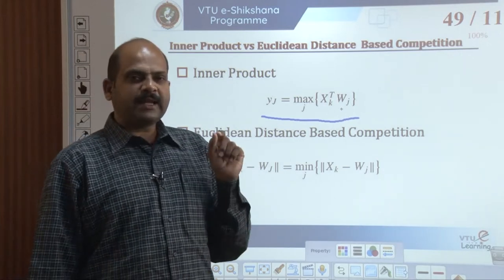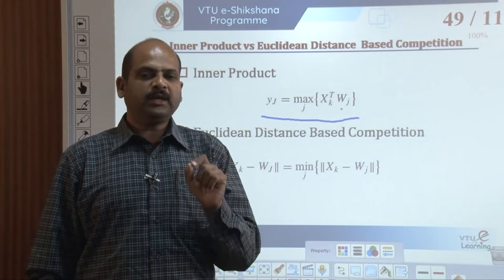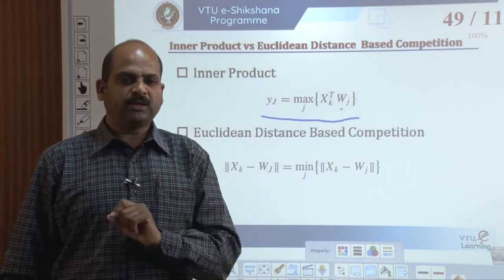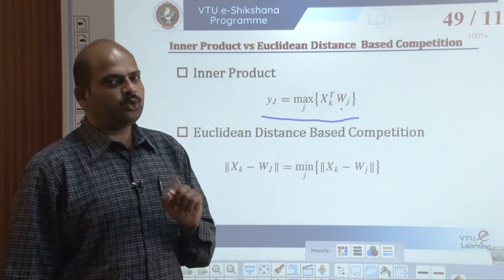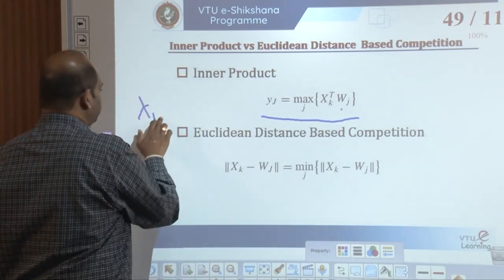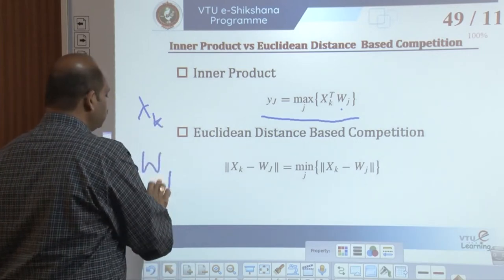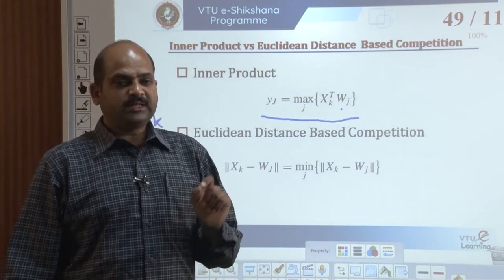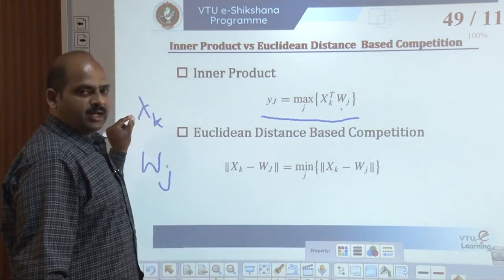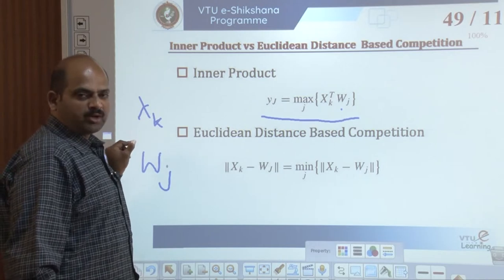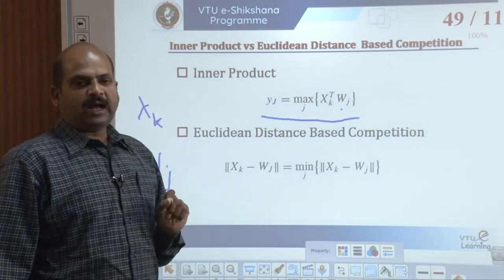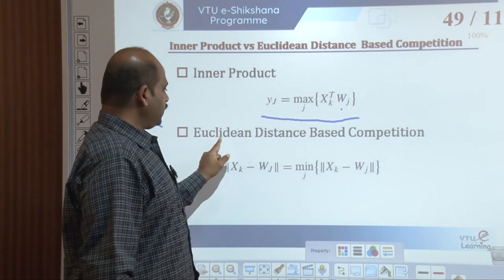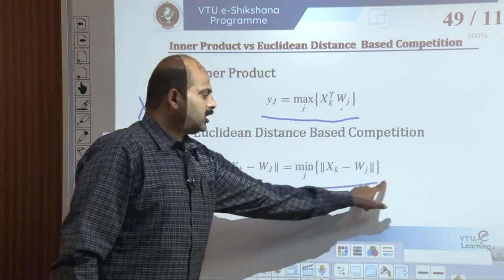Alternatively, one might select the winner based on the Euclidean distance measure. Here the distance is measured between the present input x(k) and the codebook vector w_j. Based on that measurement, the winner neuron index j satisfies the condition of Euclidean distance-based competition.